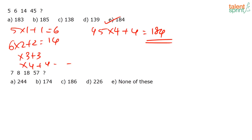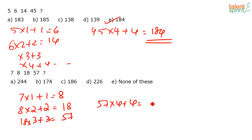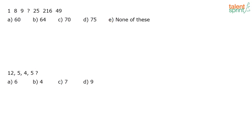Similar series: 7, 8, 18, 57, ?. Using the same pattern: 7 × 1 + 1 = 8; 8 × 2 + 2 = 18; 18 × 3 + 3 = 57; so 57 × 4 + 4 = 232, which is not in the options.